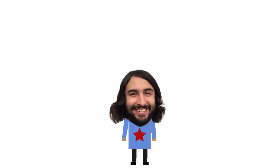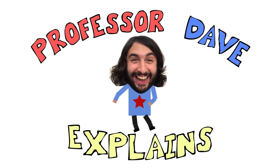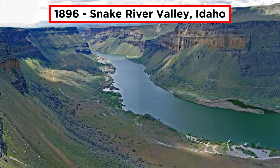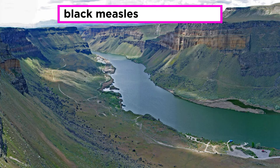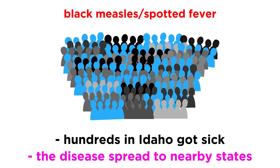It's Professor Dave, and I've got a fever. In 1896, a mysterious deadly illness spread through the Snake River Valley of Idaho. Some people called it black measles, because of the black skin rashes it caused, and others called it spotted fever. Hundreds of people in Idaho got sick, and by the early 1900s, the disease had spread to surrounding states.